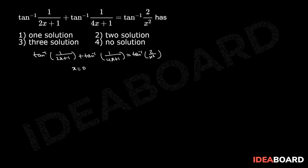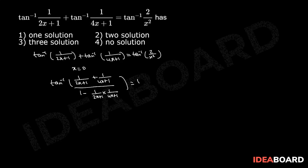The left-hand side is in the form of tan inverse x plus tan inverse y. We know that tan inverse x plus tan inverse y equals tan inverse of (x plus y) by (1 minus xy). Therefore we have tan inverse of (1 by (2x+1) plus 1 by (4x+1)) by (1 minus 1 by (2x+1) into 1 by (4x+1)) equals to tan inverse 2 by x square.